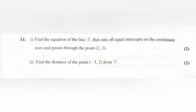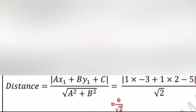Question 2. Find the distance of the point (minus 3, 2) from L. Answer: distance equal mod(ax1 plus by1 plus c) by root(a squared plus b squared), equal mod(1 into minus 3 plus 1 into 2 minus 5) by root 2, equal 6 by root 2.